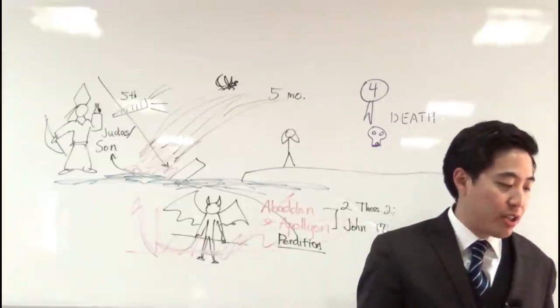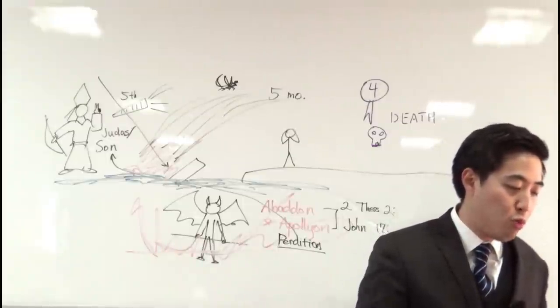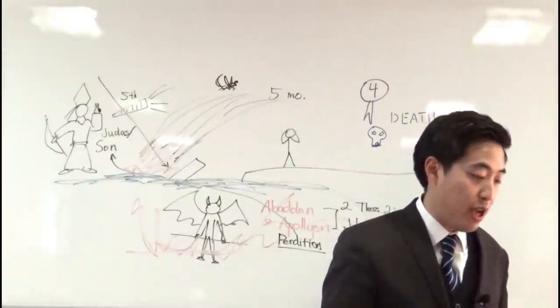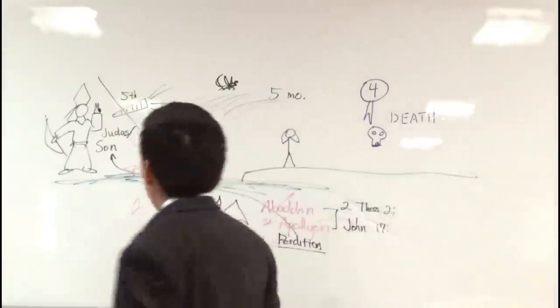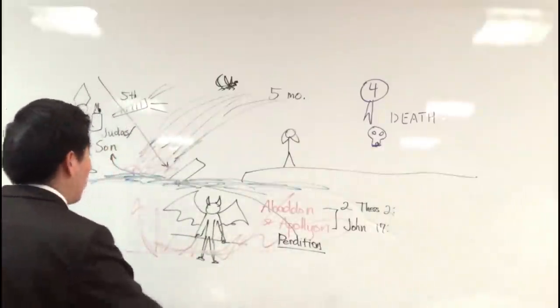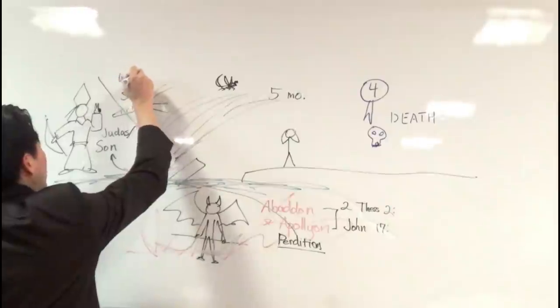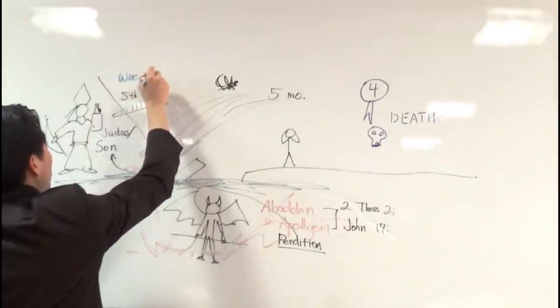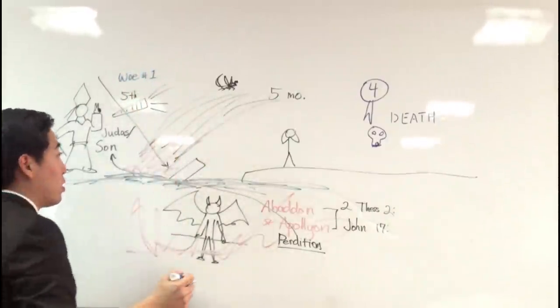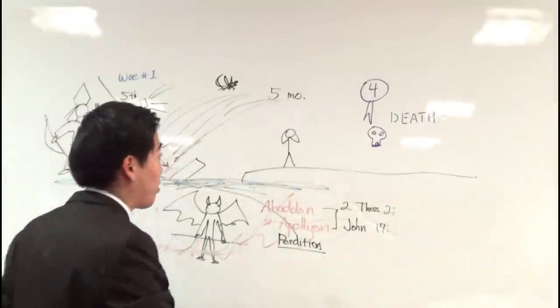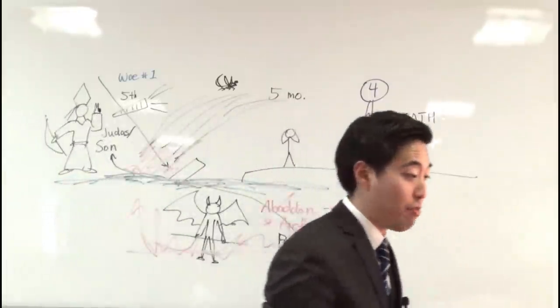Let's look at verse 12. One woe is past, and behold, there come two woes more hereafter. Ain't that scary? So this is known as woe number one. And then God says, there's going to be two more woes. What are they? Well, let's keep reading. This is going to get messed up, man.